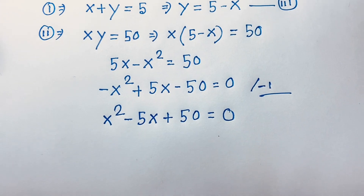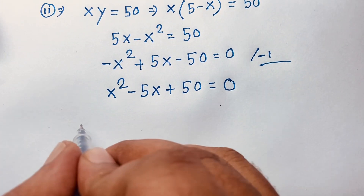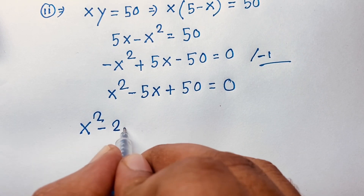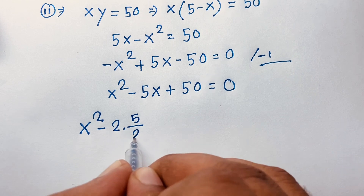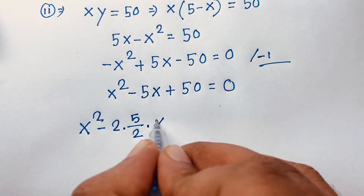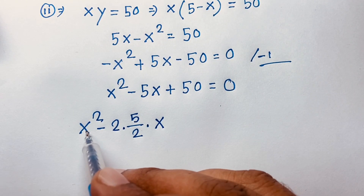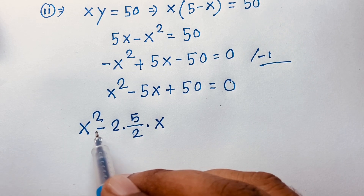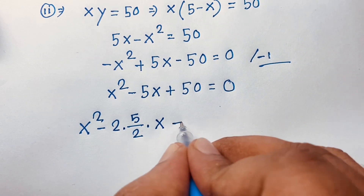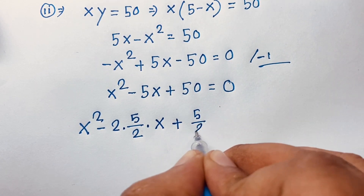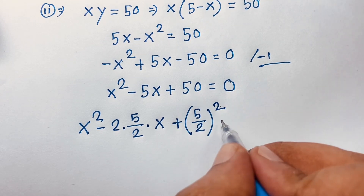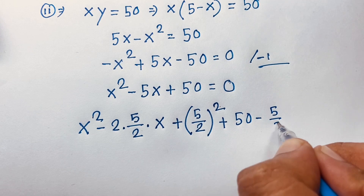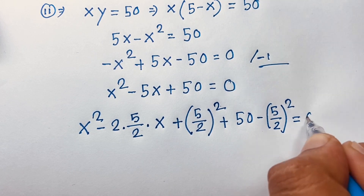Now, completing the square: we take x squared minus 2 times (5/2) times x. If you think of this as a squared minus 2ab plus b squared, where a is x and b is 5/2, then we get (x minus 5/2) squared. We subtract (5/2) squared and add 50, giving (x minus 5/2) squared minus (5/2) squared plus 50 is equal to 0.